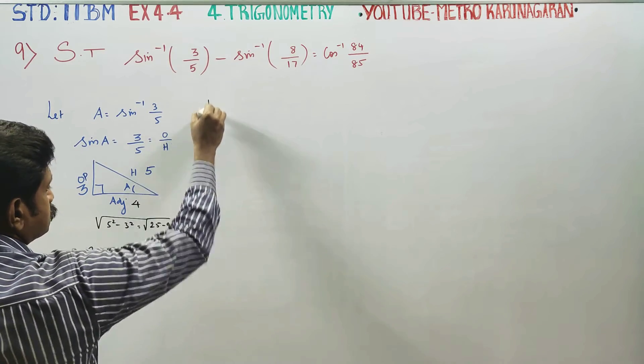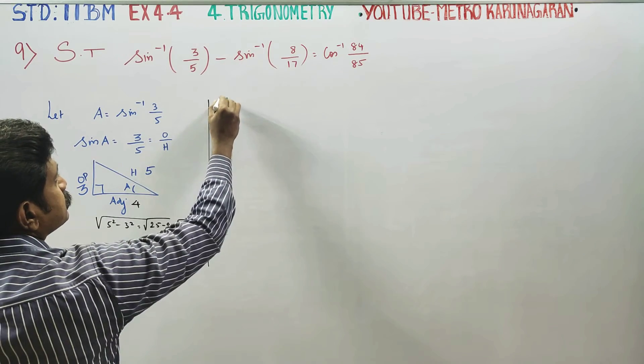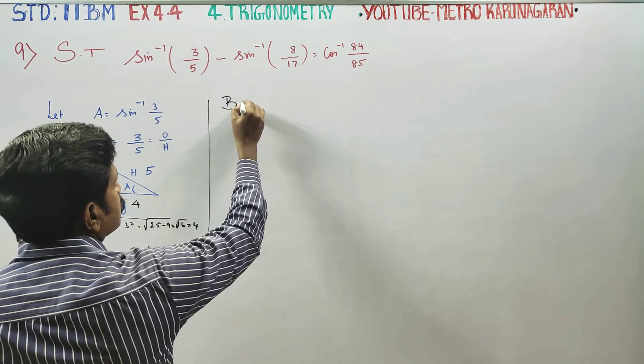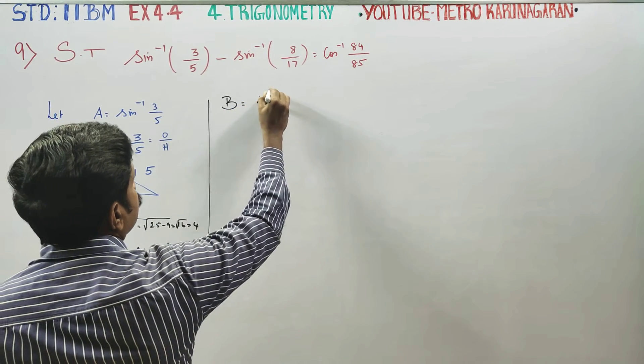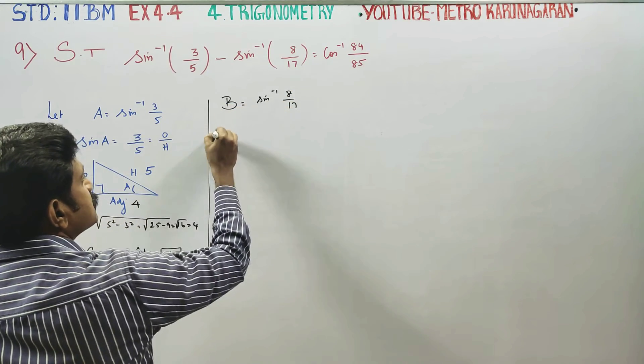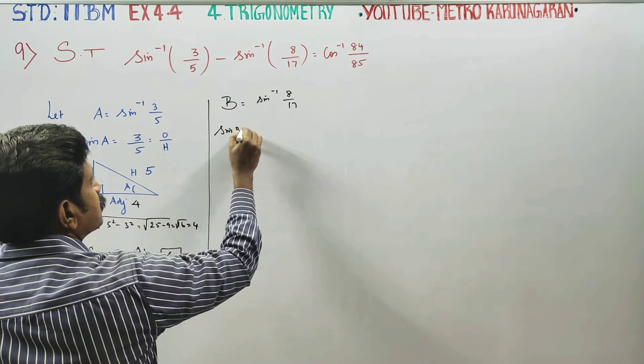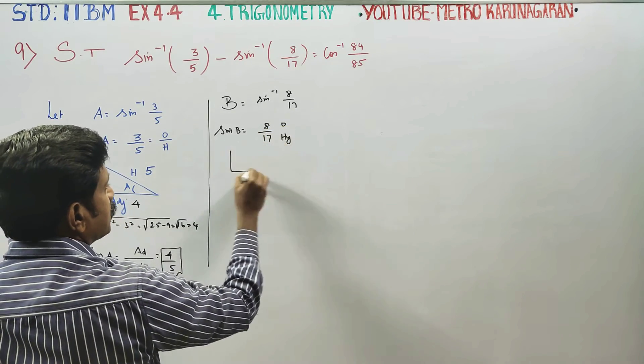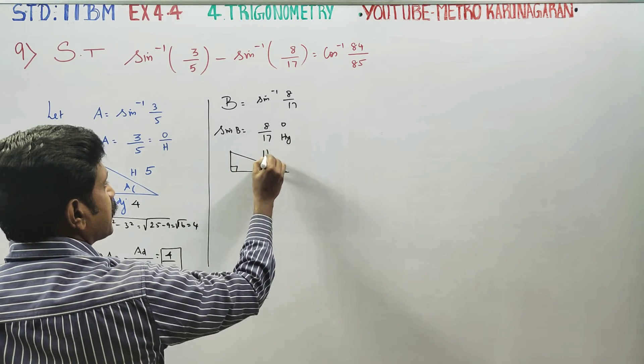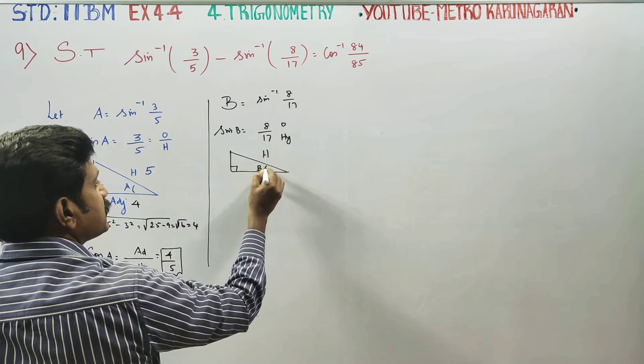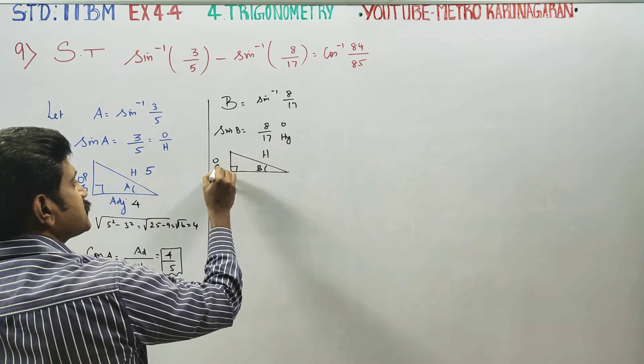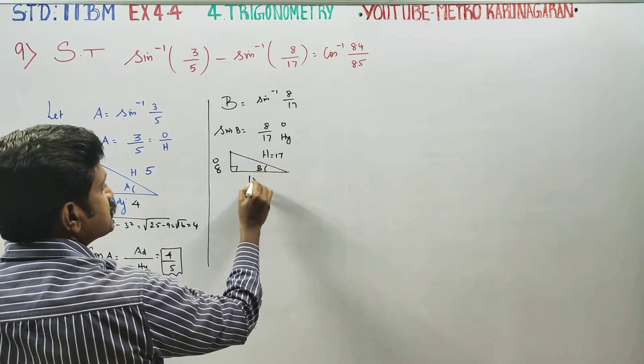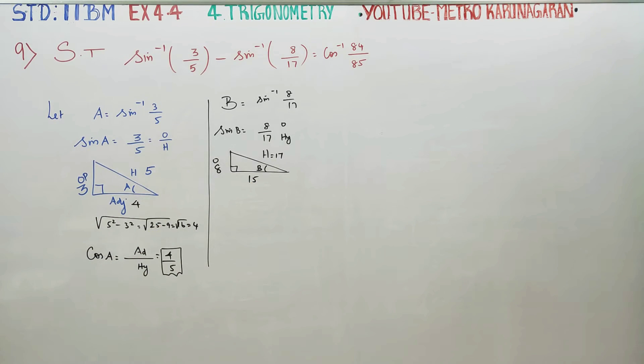After this, if you want to go to B, B is equal to sine inverse of 8 by 17. This is opposite side, this is hypotenuse side. This is a right angle triangle, this is angle B. Opposite side is 8, hypotenuse is 17. Then 8, 15, 17 is Pythagorean triple.